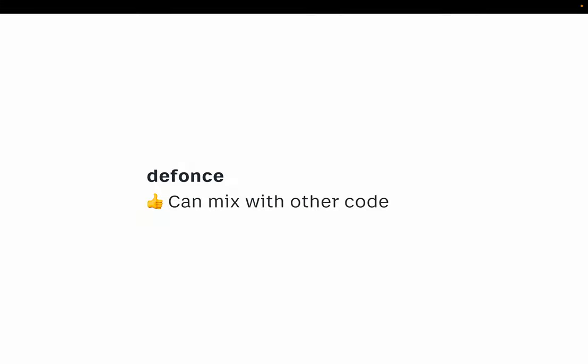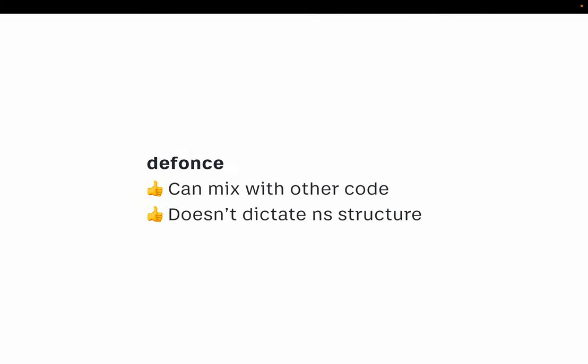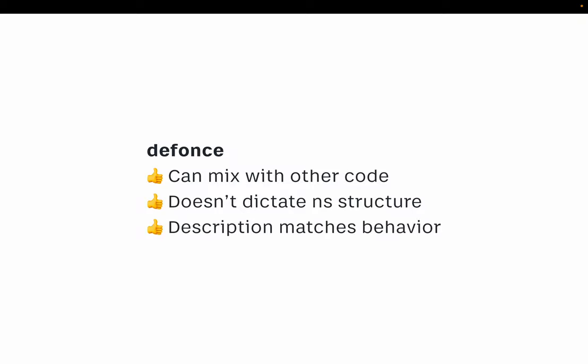The upsides of defonce: you can mix it with other code, you don't have to adapt to the reloading workflow, just make normal namespaces, no separation required. It finally works. When Clojure introduced it, it worked. Then tools.namespace broke it for a while, and now we fix it again. Now there is a meaningful difference between def and defonce — in tools.namespace there's no difference, but CLJ Reload makes them matter.